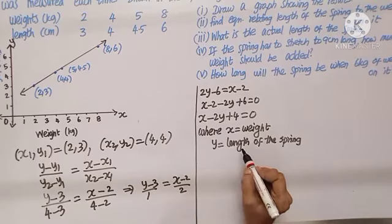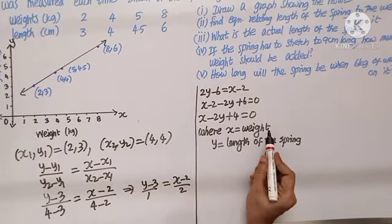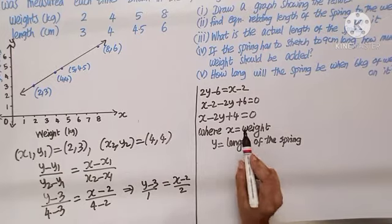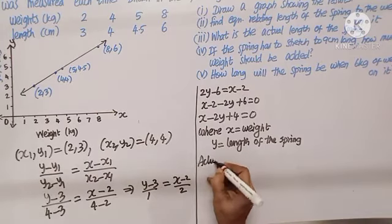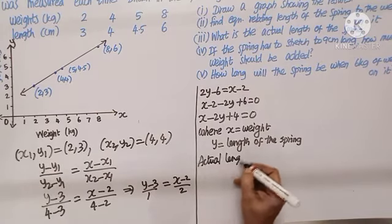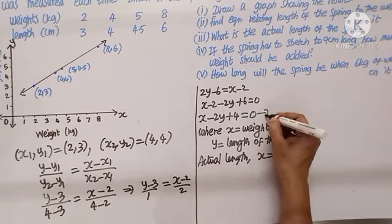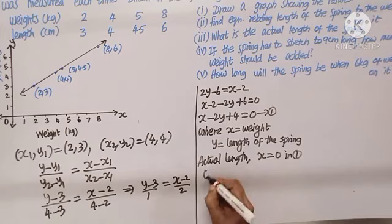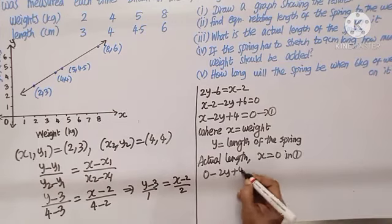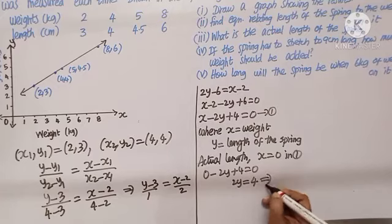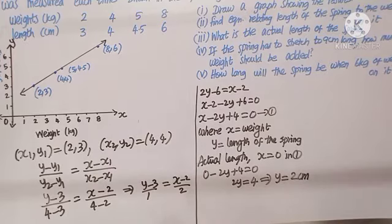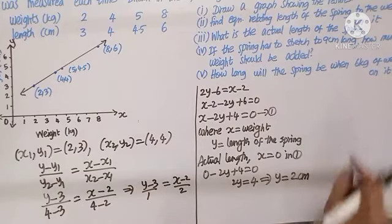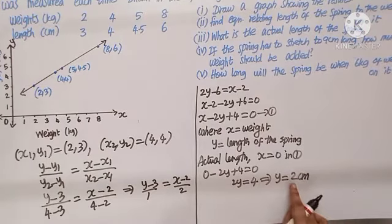Third subdivision: find the actual length of the spring. When no weights are added, X equals 0. Put X equals 0 in the equation: 0 minus 2Y plus 4 equals 0, so 2Y equals 4, giving Y equals 2 centimeters. The actual length of the spring is 2 centimeters.